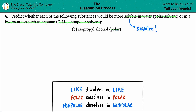They did tell us that isopropyl alcohol is polar. So if I want to dissolve a polar solute, I need it to be dissolved in a polar solvent. I'm looking for the one that's polar between water and heptane. They said that water was polar. So in this case, polar goes with polar — so the answer is water.